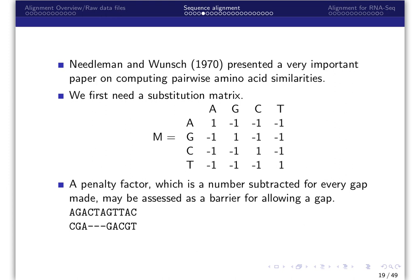In 1970, Needleman and Wunsch presented a very important paper on computing pairwise amino acid similarities. They outlined a method for comparing two amino acid sequences in a two-dimensional matrix by computing all possible frames of alignment with possible gaps. That is, the alignment assigns a score to every possible alignment and the purpose of the algorithm is to find all possible alignments having the highest score. Therefore, Needleman and Wunsch seeks a global alignment.